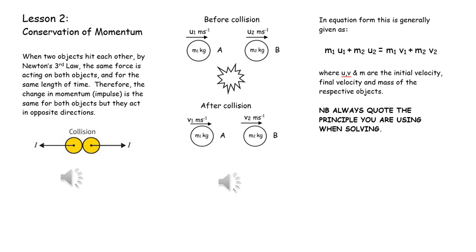Conservation of linear momentum can be used when there is a collision between two bodies that are travelling in a straight line. The momentum of the system, i.e. both bodies before the collision, is equal to the momentum of the system, i.e. both bodies after the collision.